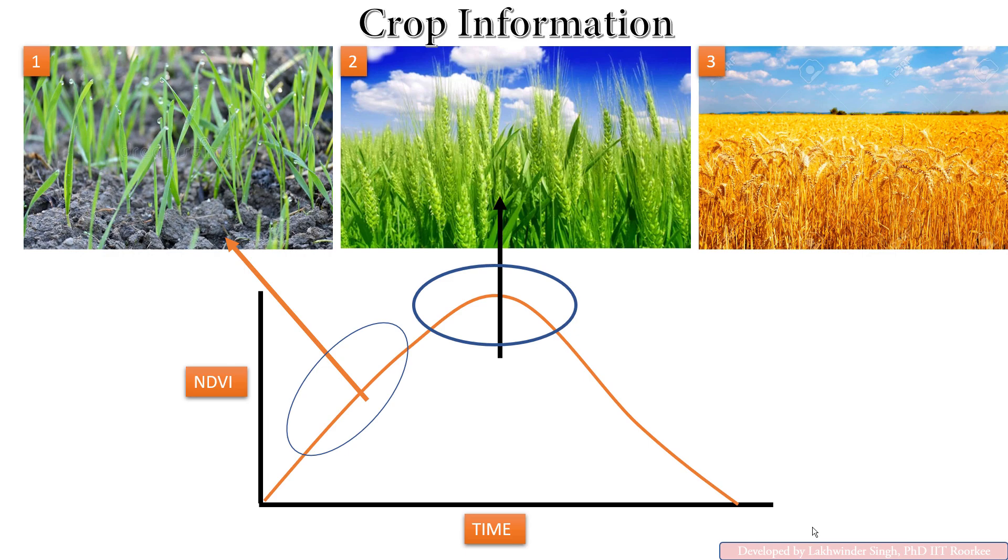When NDVI is highest, it is the period when the crop is fully green and not converted to yellow. For fully mature crop, NDVI again starts losing when it is converted near to harvest.